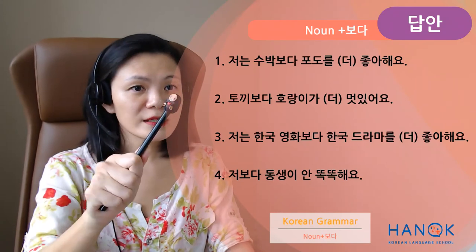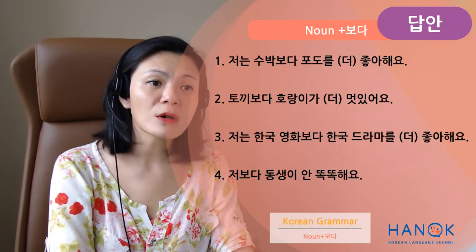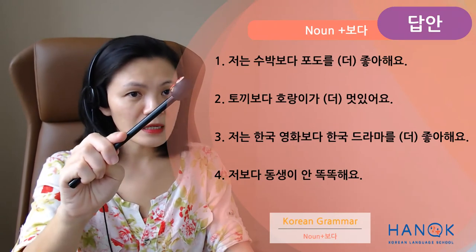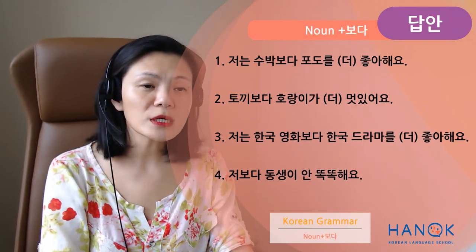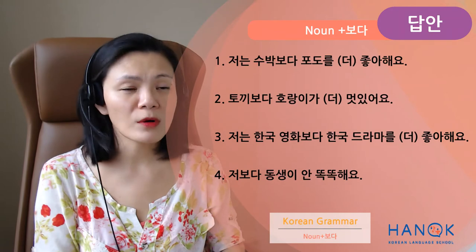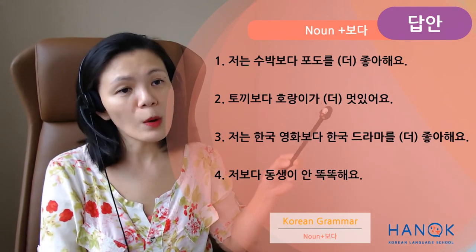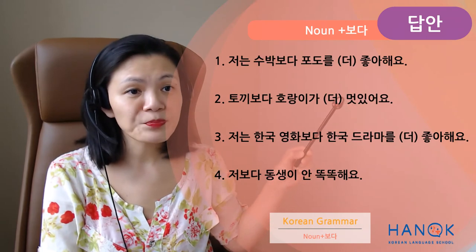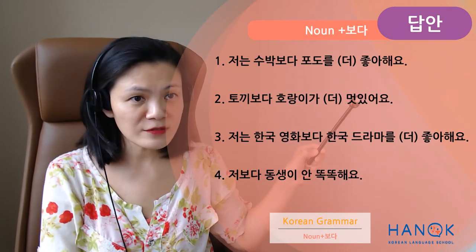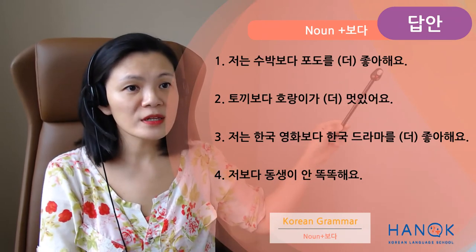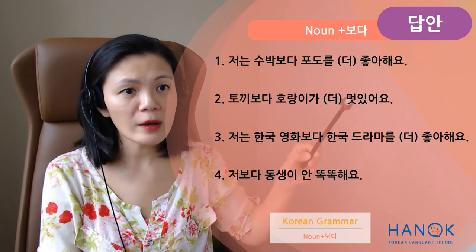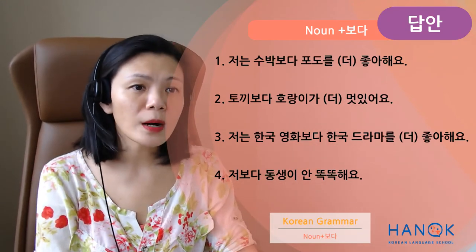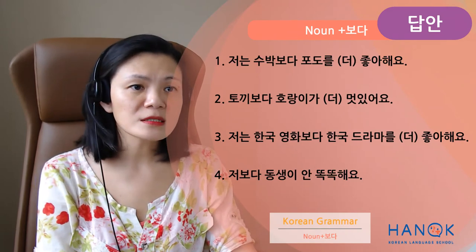답안이 나와요 — here are the answers. 1번: 저는 수박보다 포도를 더 좋아해요. 2번: 토끼보다 호랑이가 더 멋있어요. 더는 optional이에요. But if you're going to use 더, it must be in front of the adjective — 더 좋아해요, 더 멋있어요.